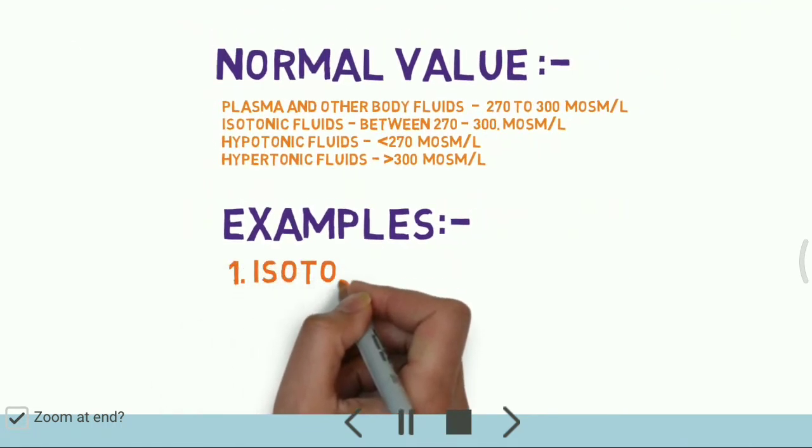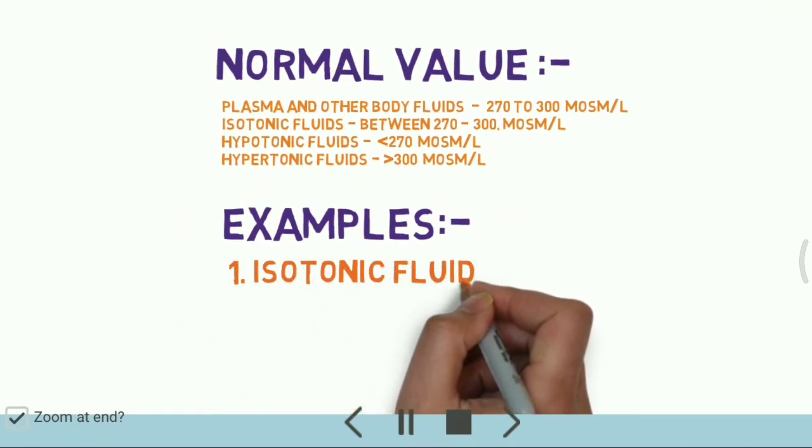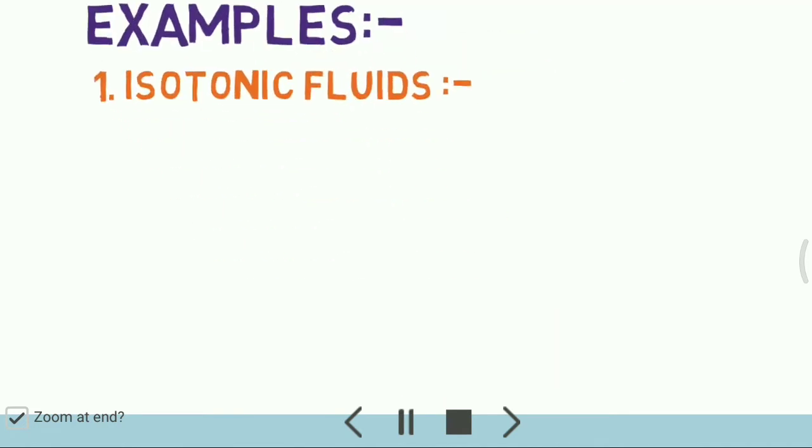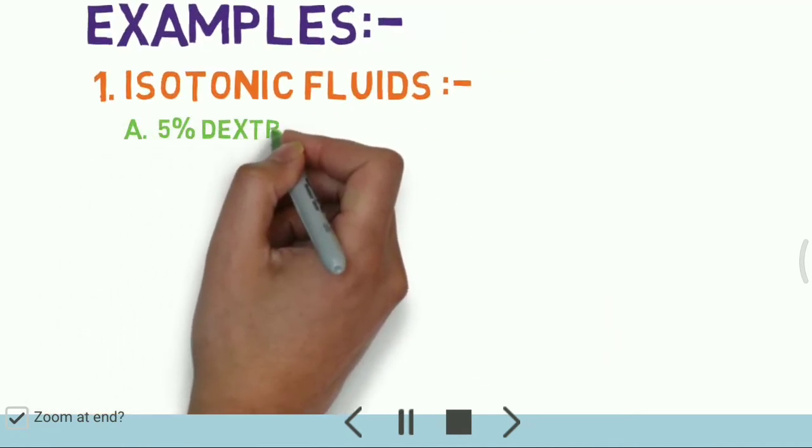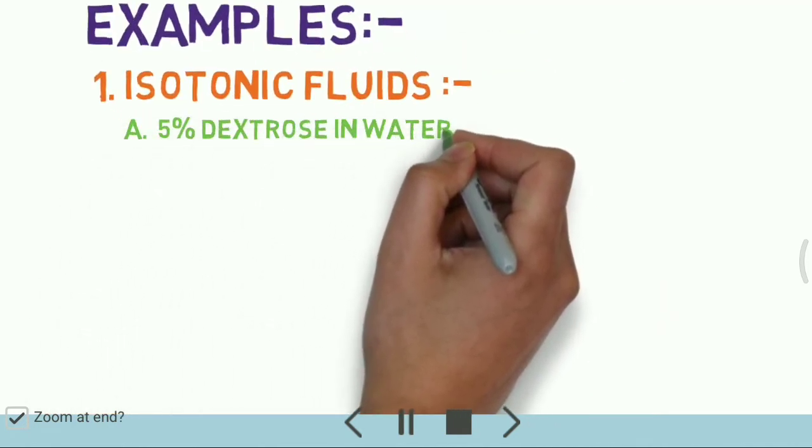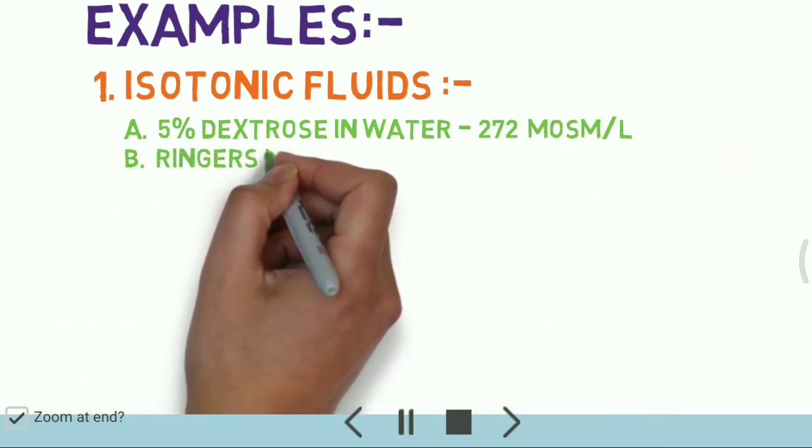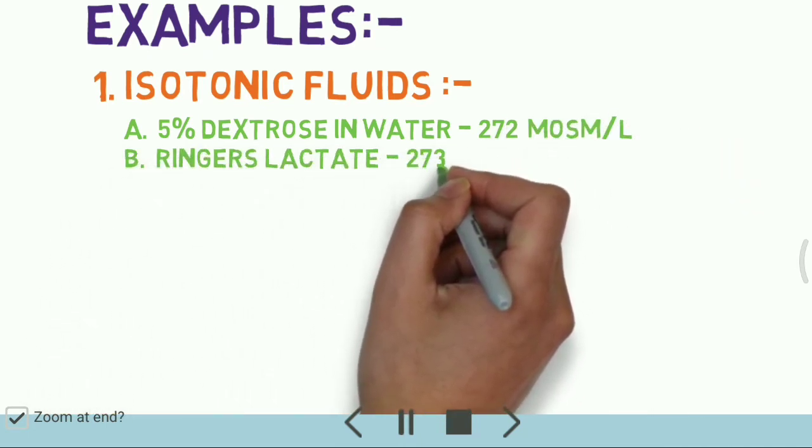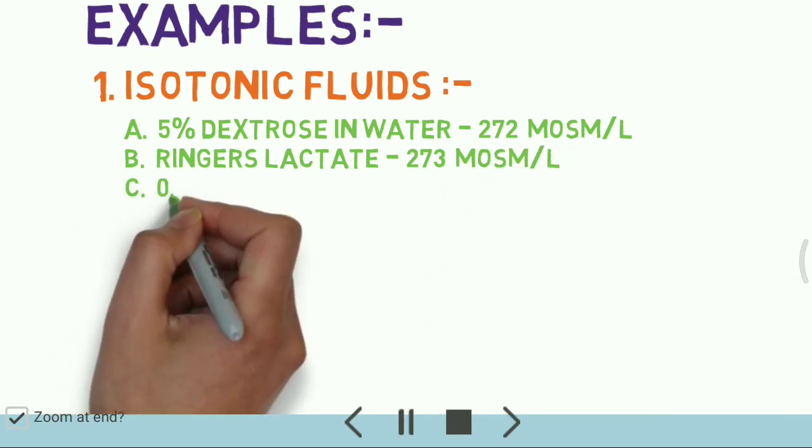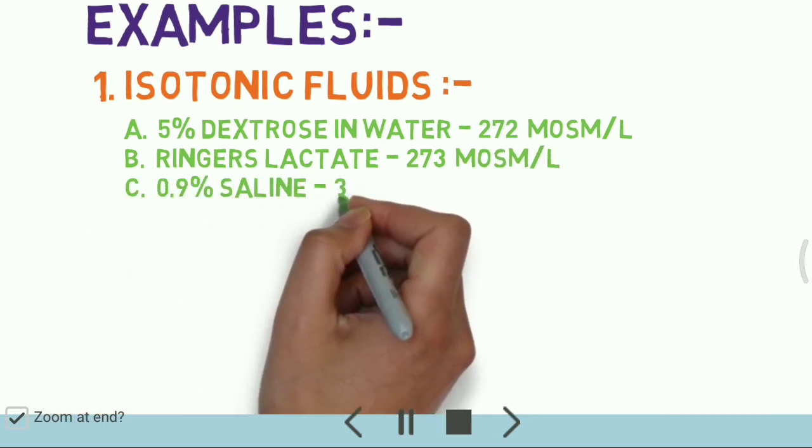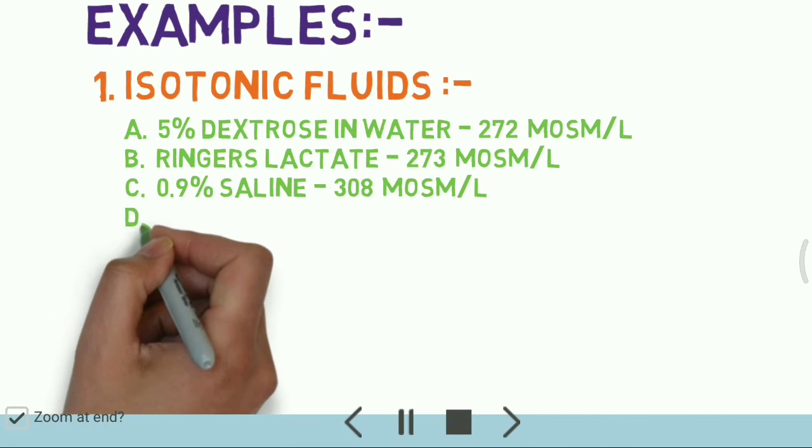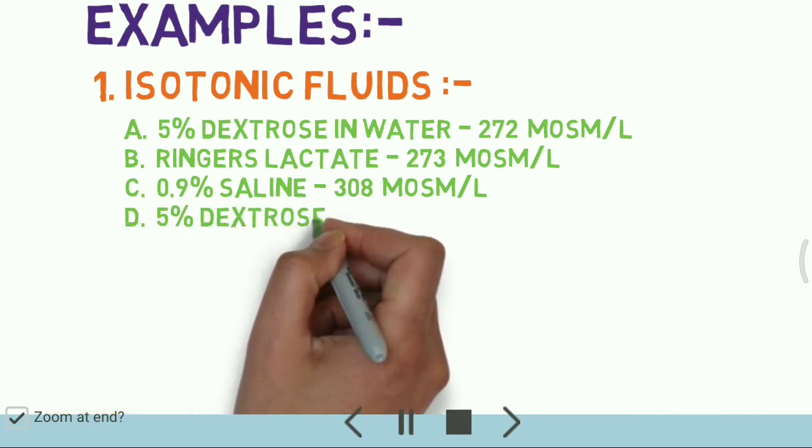Now we'll consider examples of isotonic fluids. 5% dextrose in water has osmolarity 272 milliosmoles per liter. Ringer lactate: 273 milliosmoles per liter. Normal saline, 0.9% normal saline: 308 milliosmoles per liter.